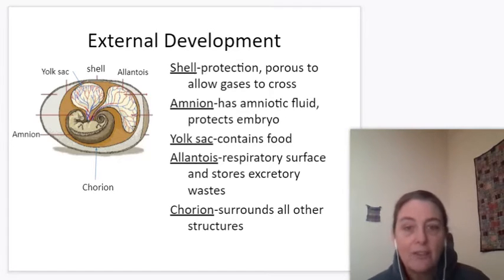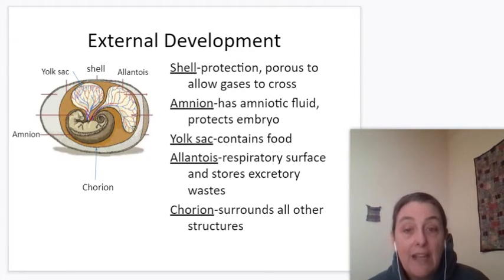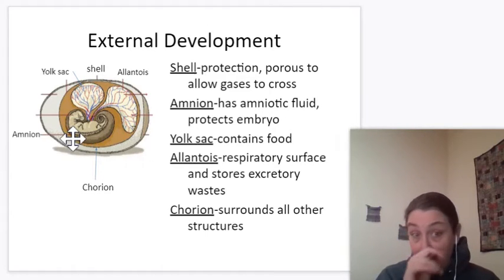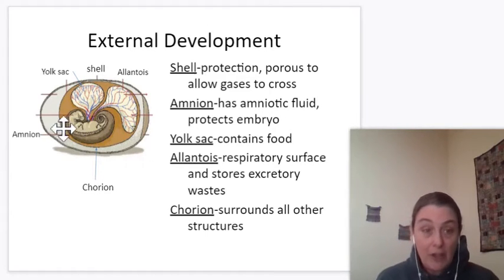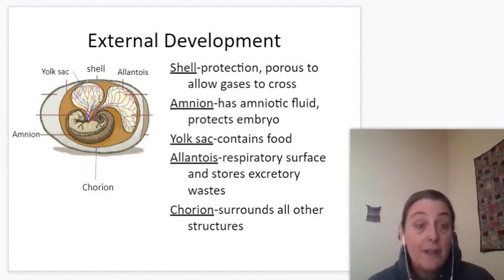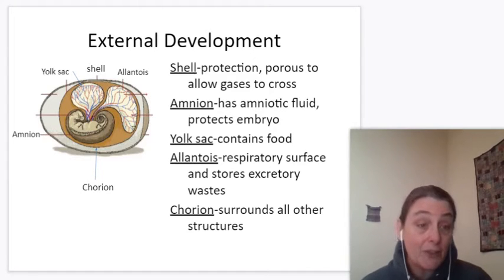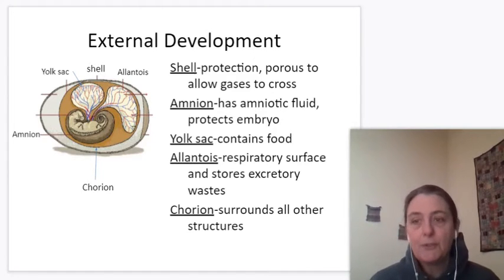You have the chorion, which is around the entire thing filled with fluid that protects — rolls back and forth so the baby doesn't get too jostled. And then there's the amnion that is also around the baby, much like our amniotic sac that we'll talk about for pregnancy. So that's external development in birds.